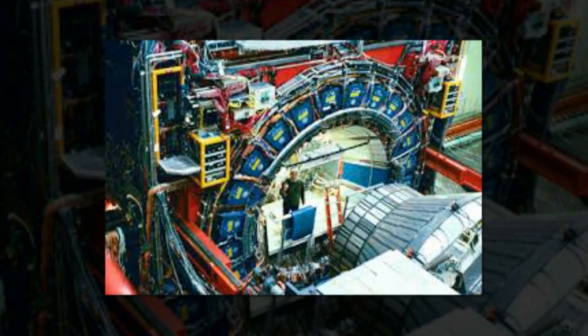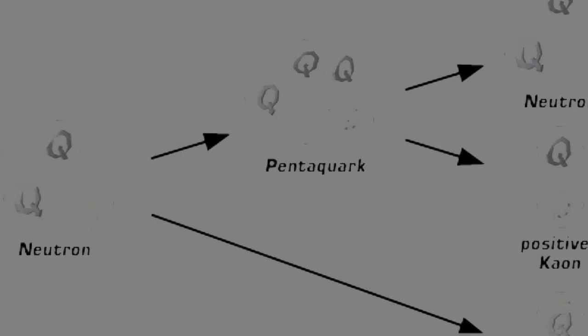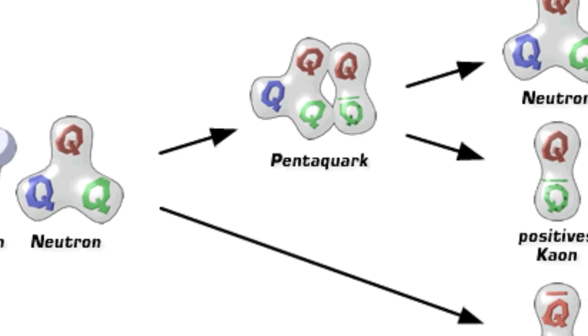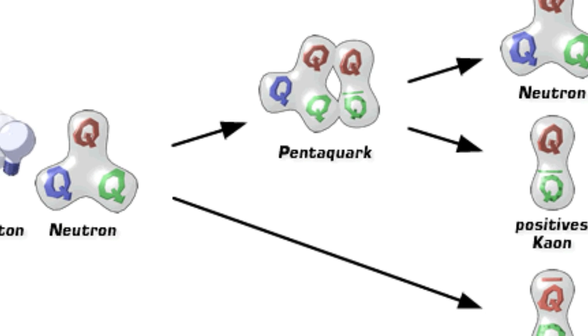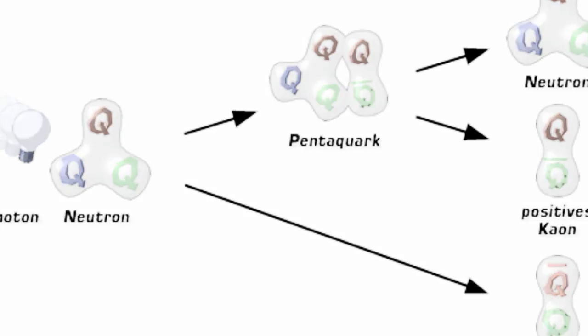Protons and neutrons are made up of three kinds of quarks bound together. But theorists calculate that, in principle, particles could be made of up to five quarks. Such particles would be rich testing grounds for quantum chromodynamics.